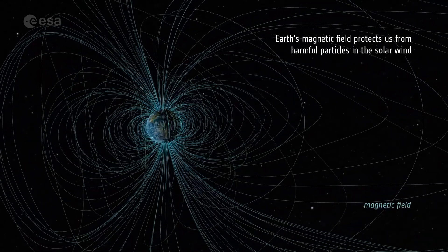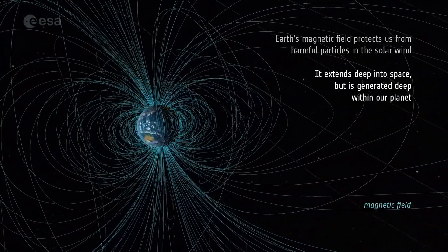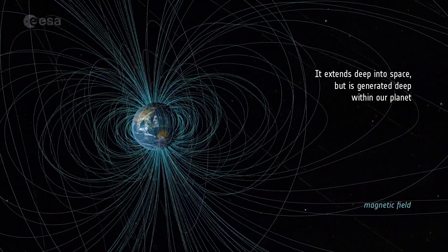Earth's magnetic field protects us from harmful particles in the solar wind. It extends deep into space, but is generated deep within our planet.